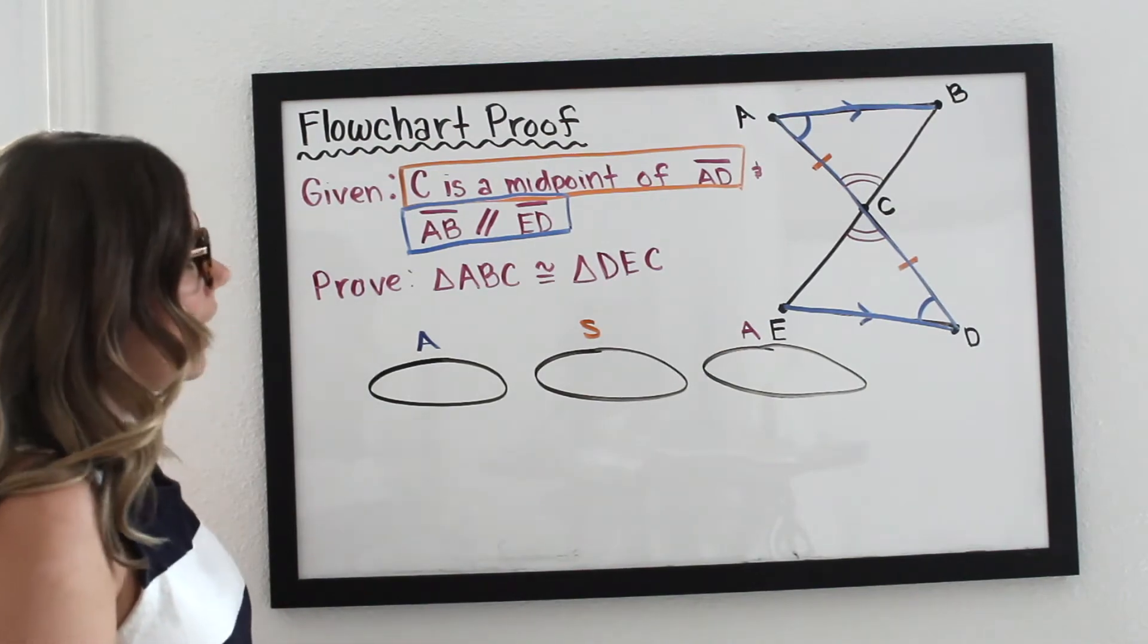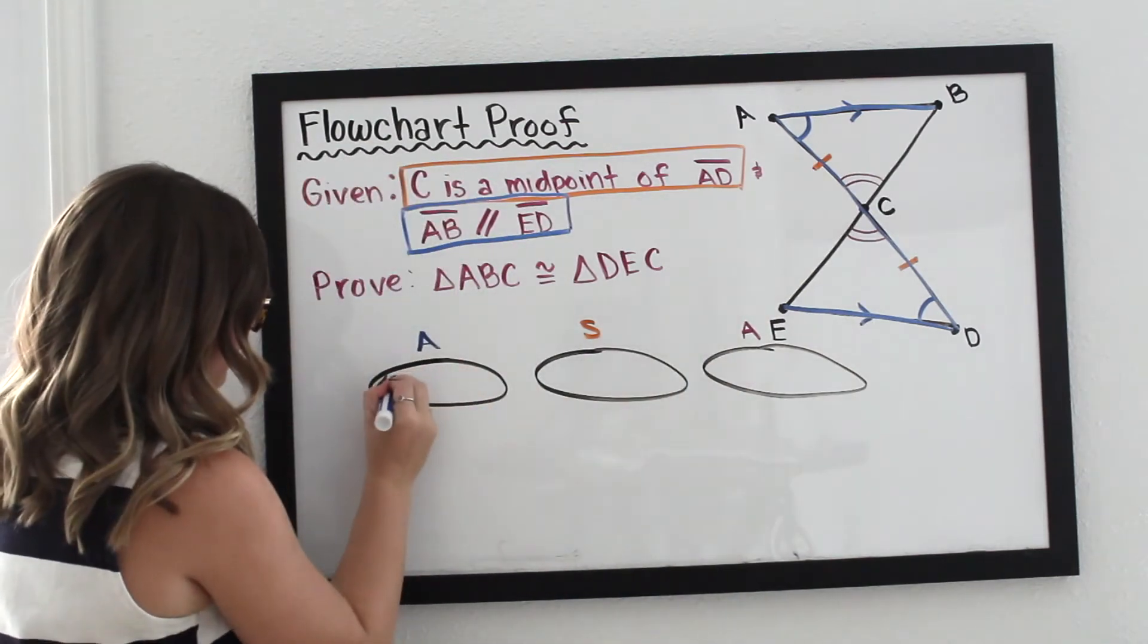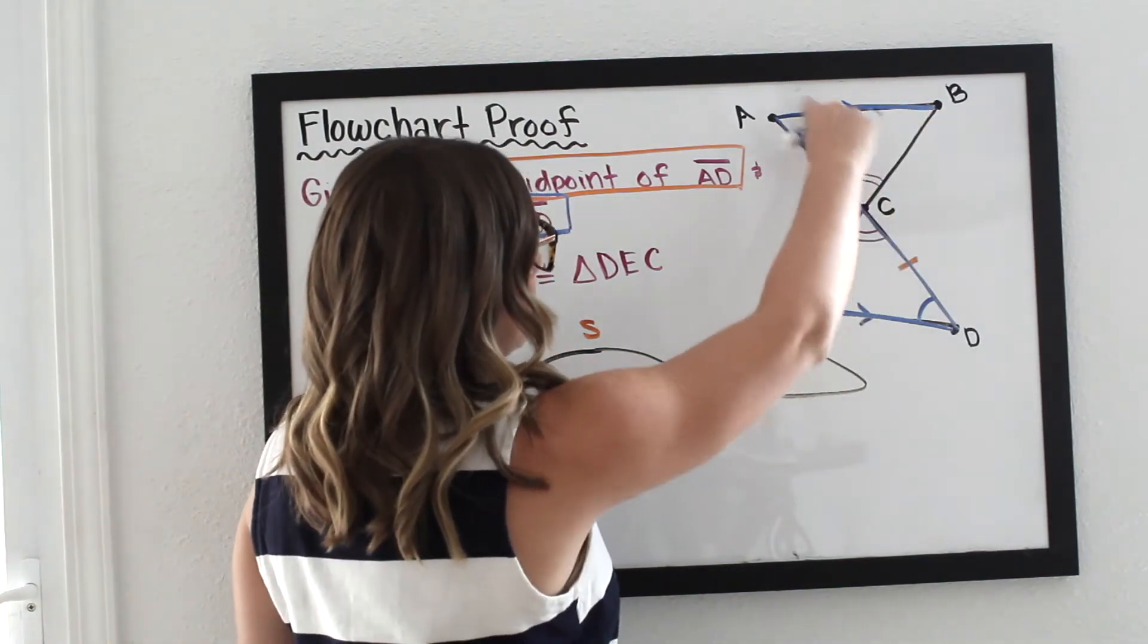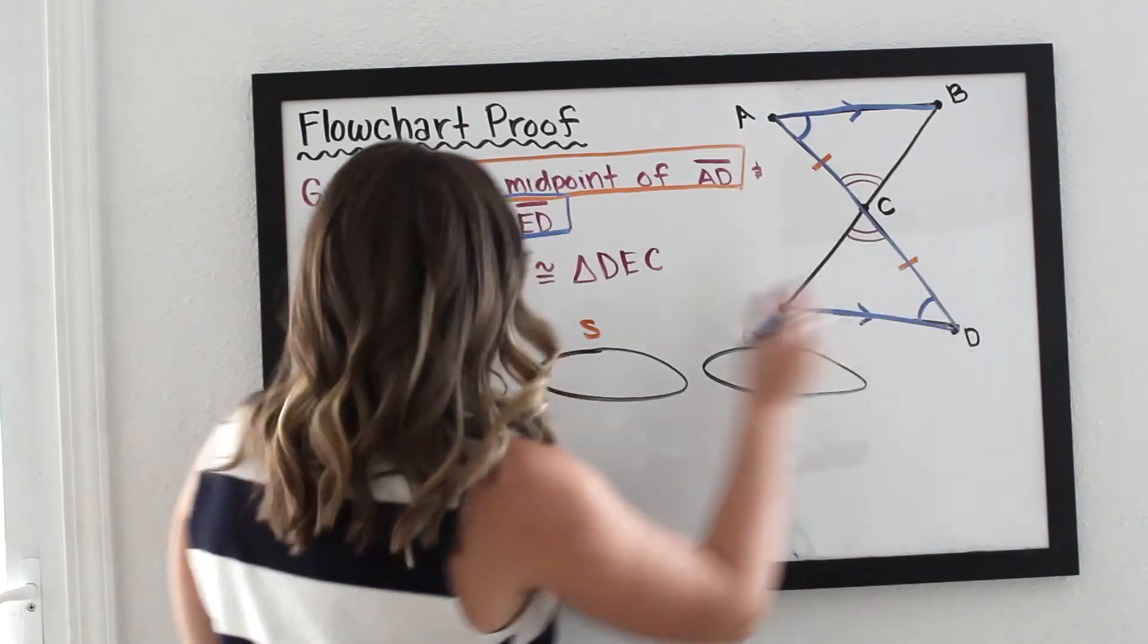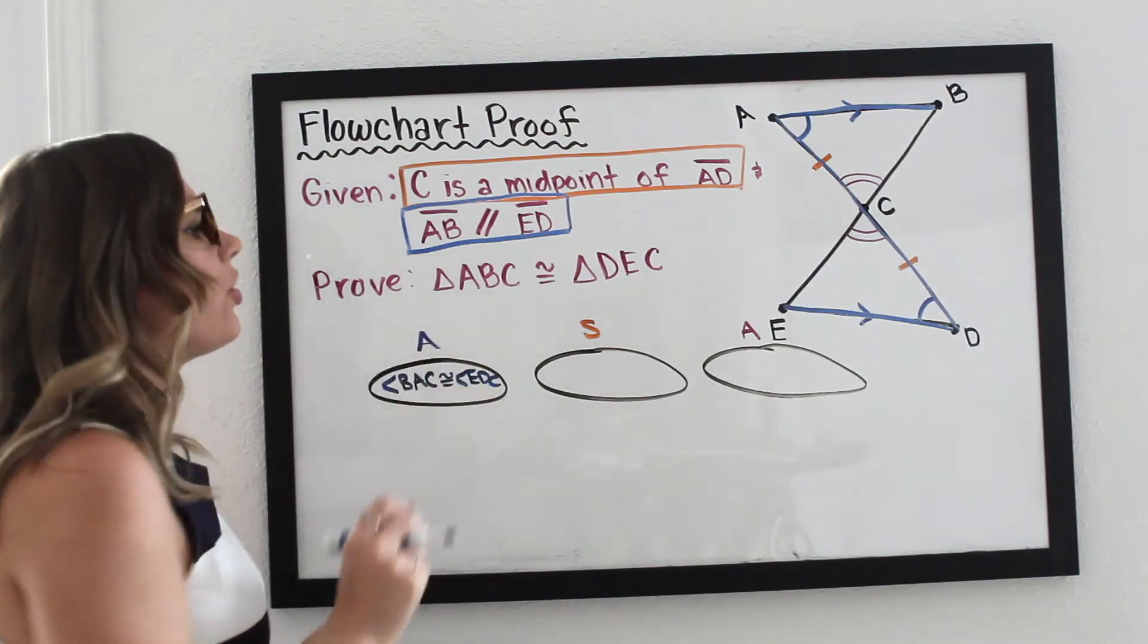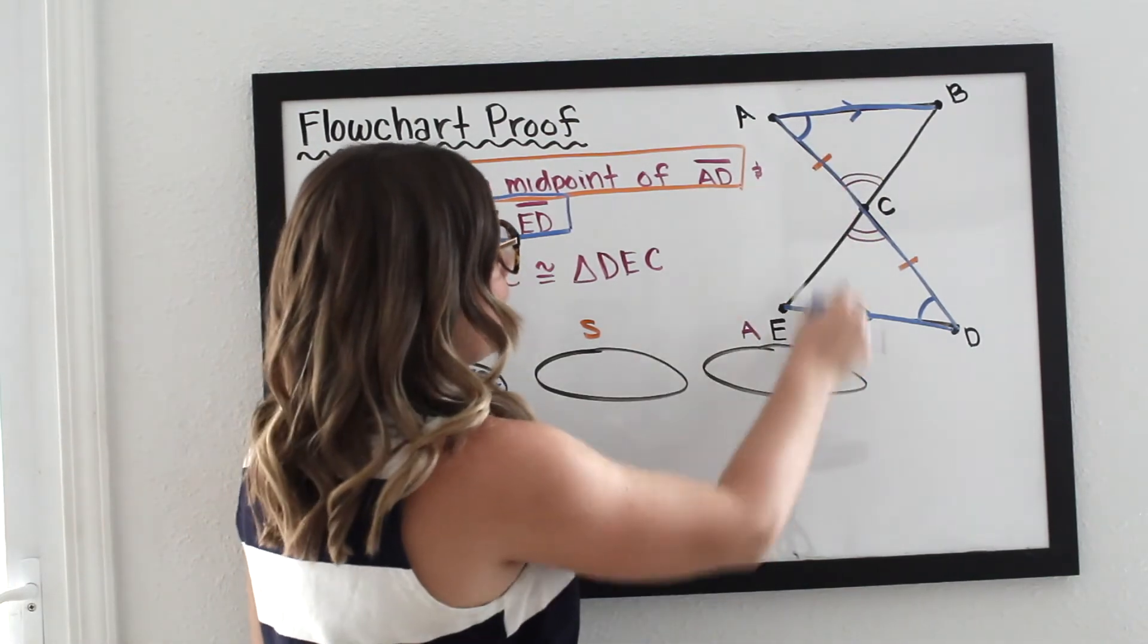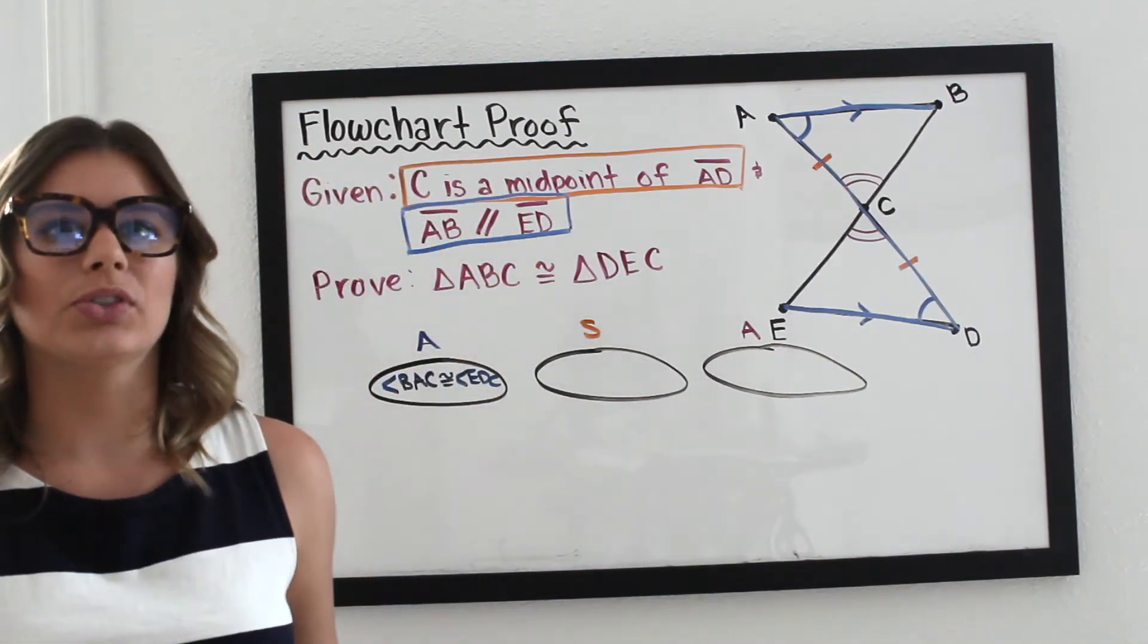Okay, so I know that angle BAC, so I'm going to write that down, is congruent to angle—so we have BAC, this angle right here—is congruent to angle EDC, this angle right here. And the way that we were able to do that was because we use the theorem: when two lines are parallel and they're cut by a transversal, alternate interior angles are congruent.